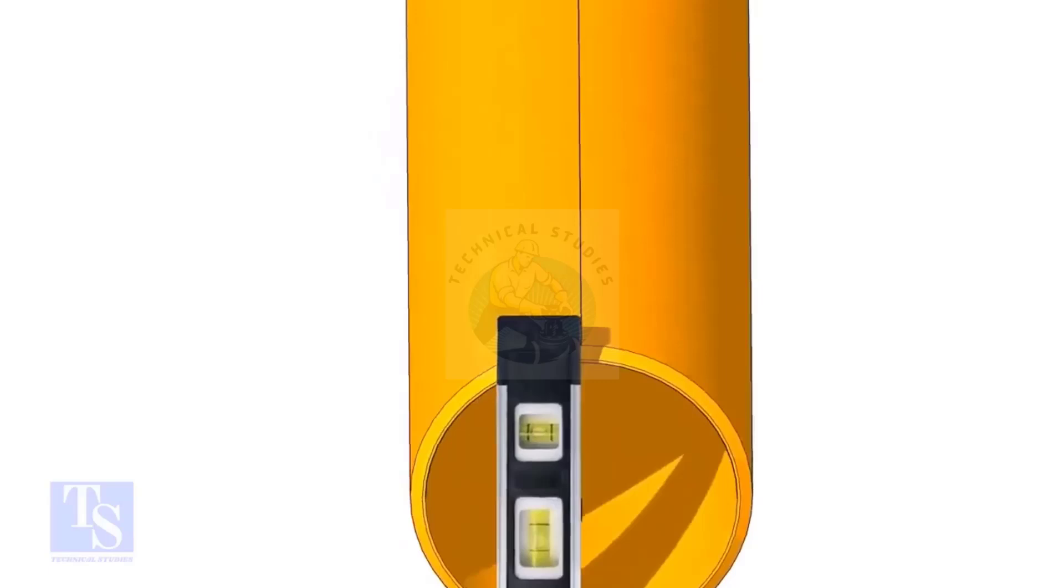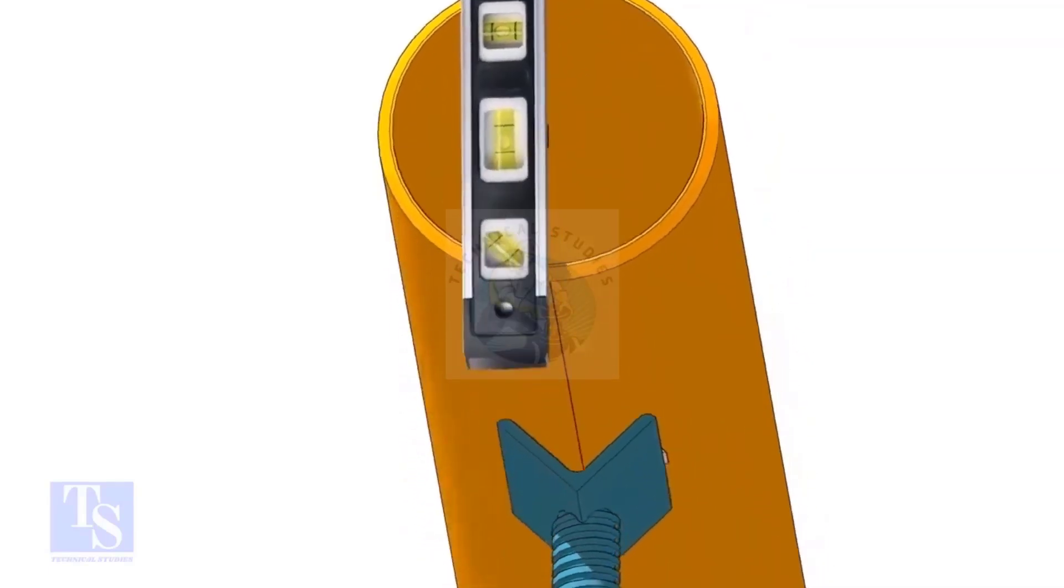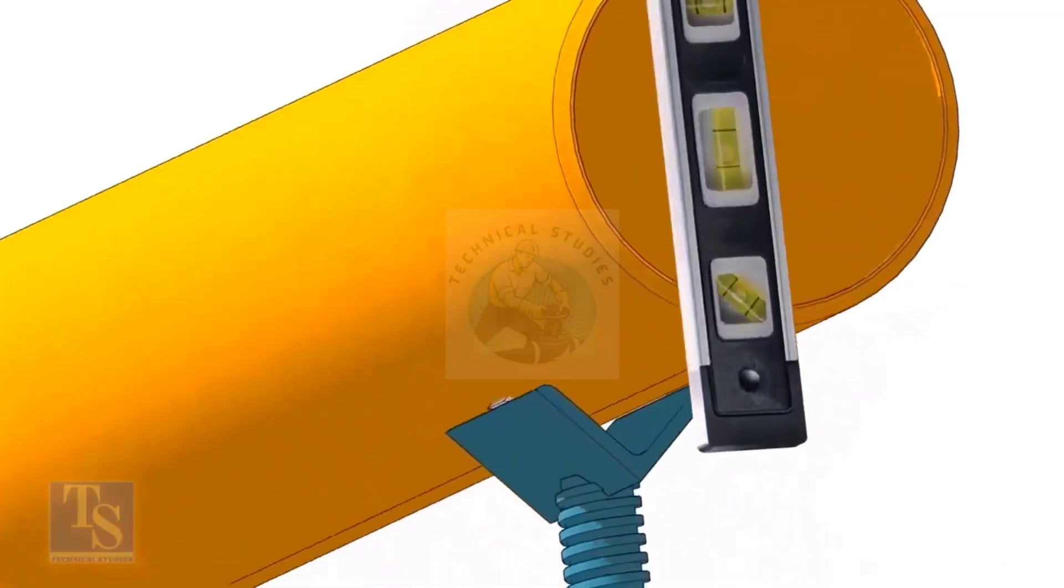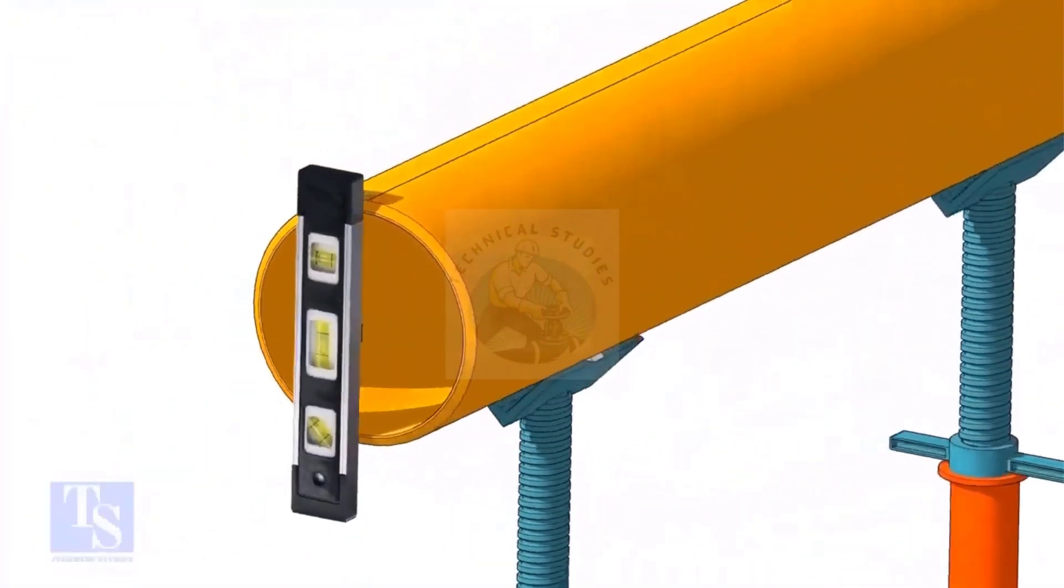Level the pipe horizontally and vertically as shown. After leveling, arrest the pipe to stop it from rotating.